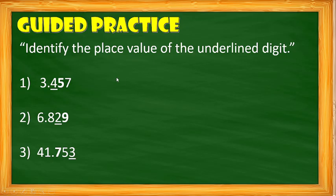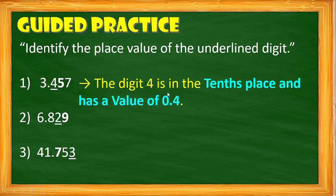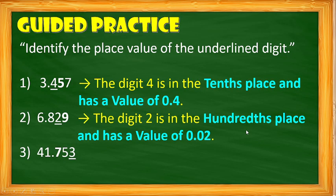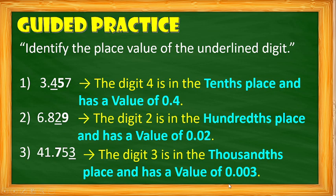Let's identify the place value of the underlined digit. Example number 1: the digit 4 is in the tenths place and has a value of 0.4. Example number 2: digit 2 is in the hundredths place and has a value of 0.02. Then for 41.753 thousandths, the underlined digit is 3 — digit 3 is in the thousandths place and has a value of 0.003, read as 3 thousandths.